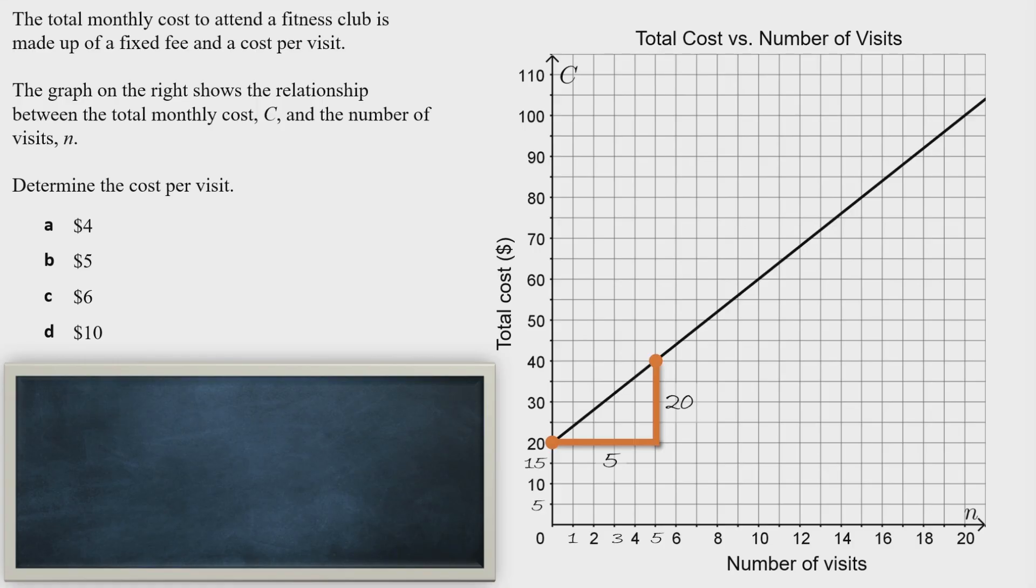So we have 20 and 5, which means over 5 visits the cost went up by $20. We need to figure out how much the cost changes per visit—that is, for 1 visit. Since it's $20 for 5 visits, we divide: 20 ÷ 5 = 4. So each visit costs $4, and that matches one of our multiple choice options, so that's the correct answer.